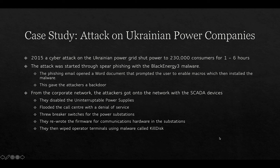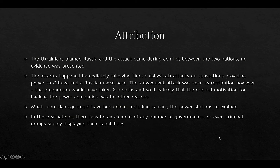The attackers then wiped operators' terminals using malware called KillDisk, making recovery difficult. The Ukrainians blamed Russia for the attack as it occurred during the conflict between the two nations, though no evidence was presented. The attack happened immediately following kinetic, or physical, attacks on substations providing power to Crimea and a Russian naval base. However, the preparation would have taken at least six months, suggesting the original motivation for hacking the power companies may have been for other reasons. Much more damage could have been done, including causing power stations to explode, and there may be an element of governments or criminal groups simply displaying their capabilities.